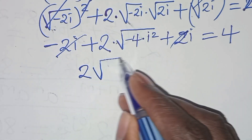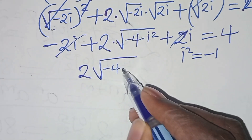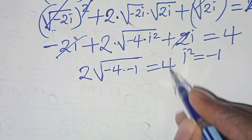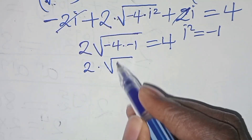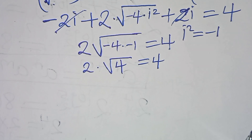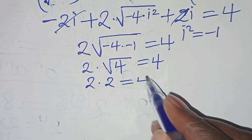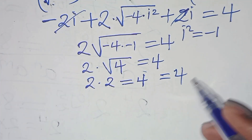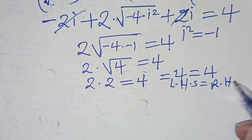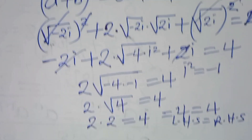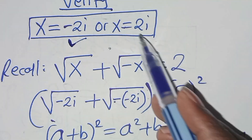The minus 2i and plus 2i simplify. We have 2 multiplied by i squared, and i squared equals minus 1, so minus 4 times minus 1 gives 4. So we have 2 times square root of 4 equals 4. Square root of 4 is 2, so 2 times 2 equals 4, which equals 4. The left side equals the right side, proving that x equals minus 2i satisfies the equation.